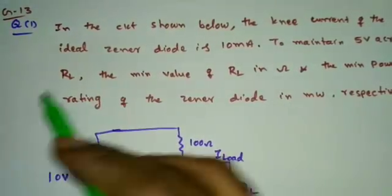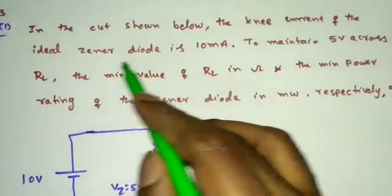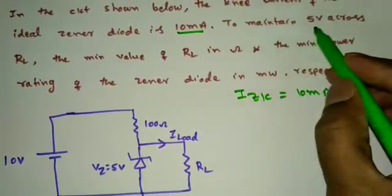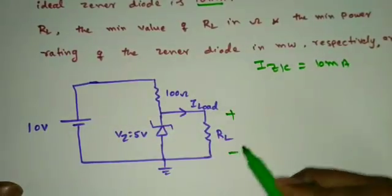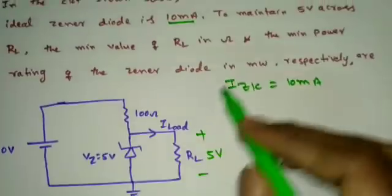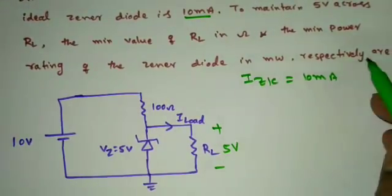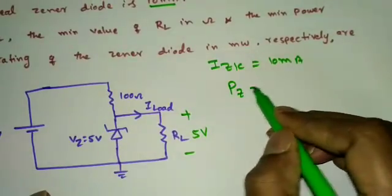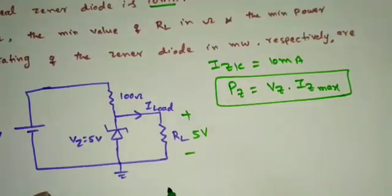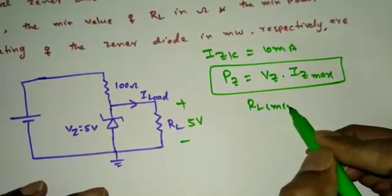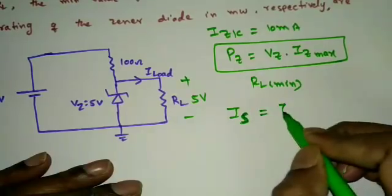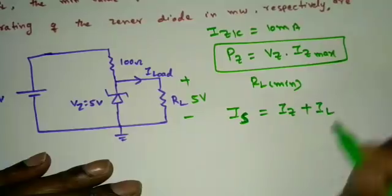Question 1 is from GATE 2013. In the circuit shown, the knee current of the ideal Zener diode is Izk = 10 mA. We need to find: (1) the minimum value of RL in ohms to maintain 5 V across RL, and (2) the minimum power rating of the Zener diode in milliwatts. The power dissipation across the Zener diode is Vz × Iz_max. The key equation is: Is = Iz + IL.